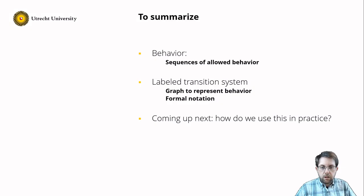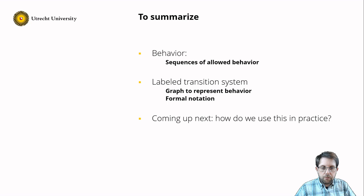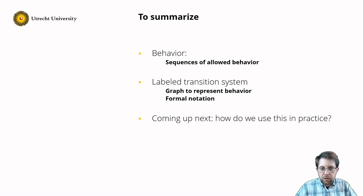What have we seen in this clip? We have seen that behavior can be seen as sequences of allowed actions, and that we can model this with labeled transition systems — basically a graph to represent behavior. We have also seen the formal notation around it. Coming up next: how do we use this in practice?